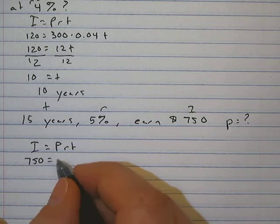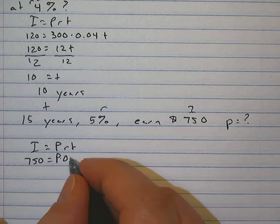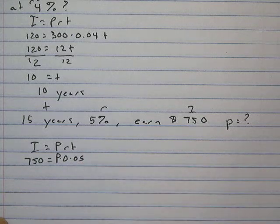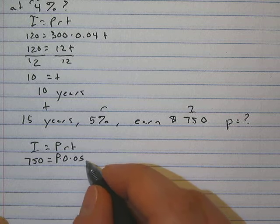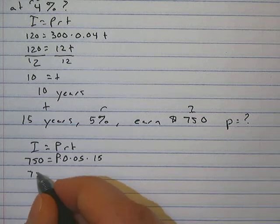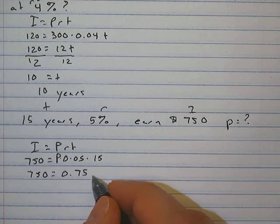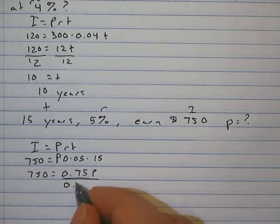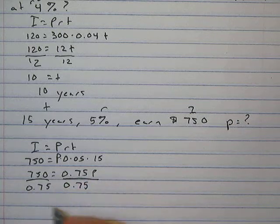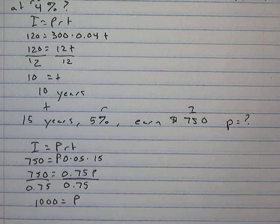Fill in what we have. Interest is $750, principal is P, rate is 0.05, and then times 15. So 750 equals 0.75P. Divide both sides by 0.75.